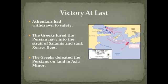However, the Athenians had mostly withdrawn to safety, and the Greeks now put their faith into the ships that Themistocles had encouraged them to build. They lured the Persian navy into the Strait of Salamis, and the warships, which were powered by rowers, drove into the Persian boats with battering rams and managed to sink most of Xerxes' fleet. The following year, the Greeks again defeated the Persians on land in Asia Minor, which brought an end to the Persian invasions.